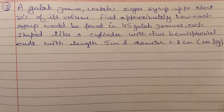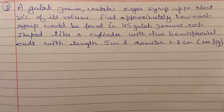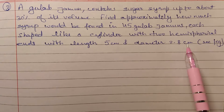बाकी का 70% कोई और material होगा। हमें find out करना है कि 45 gulab jamuns में कितना sugar syrup contained है। तो 45 के लिए find करने से पहले हम एक के लिए find करेंगे।